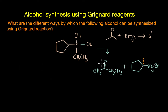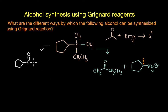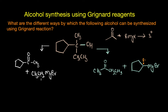Now, what if our ketone is formed between this group and the methyl group? In that case, the reactants would be C=O with CH₃ plus CH₃CH₂–MgBr, so the ethyl group comes from the Grignard reagent. That gives us one more retrosynthetic possibility.